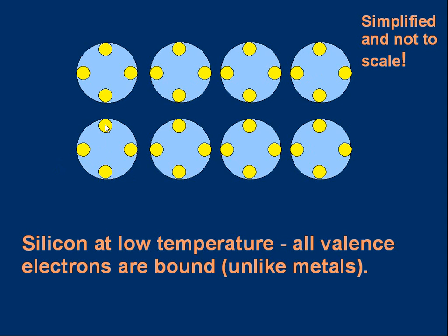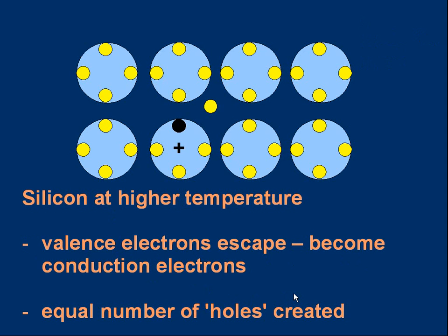We're really interested in what happens to the valence electrons. If we have some silicon, the atoms are arranged in the lattice. And at low temperatures, all of the valence electrons, the outer electrons, are bound to the atom. They are in orbit around the nucleus, like all the other electrons. That's not what happens in a metal. In a metal, valence electrons can escape and wander around. They are the conduction electrons. But in silicon at low temperature, all the valence electrons are bound.